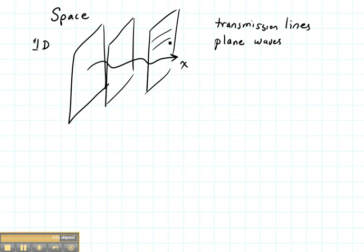A plane wave is something that is constant in two directions, say the y and the z direction, but varies in the x direction. So those would be 1D waves.